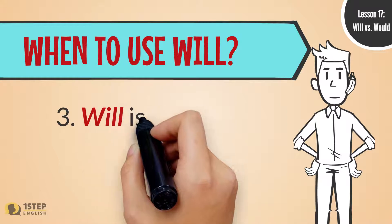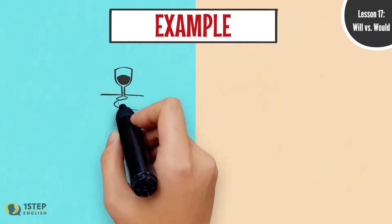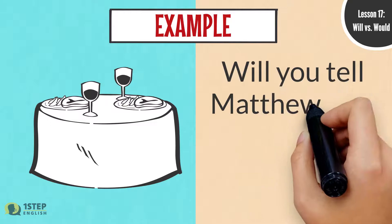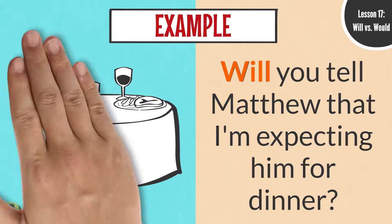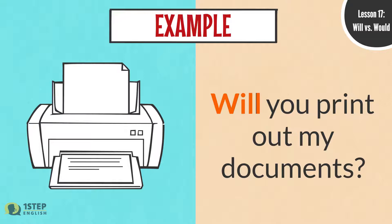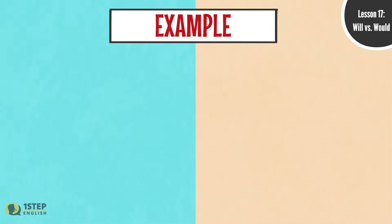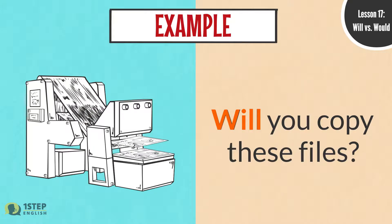When to use Will. Three: Will is used when we ask someone to do something for us. For example: Will you tell Matthew that I'm expecting him for dinner? Will you print out my documents? Will you copy these files?